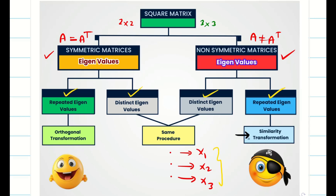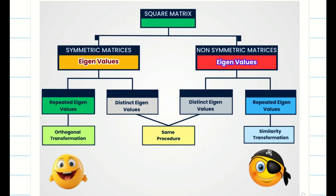In this case, we are going to use the concept called similarity transformation. In today's session, I am not going to deal with distinct eigenvalues because for both cases the procedure is the same — you can watch the video from the playlist. Whatever procedure suits for symmetric matrix with non-repeated eigenvalues also suits for non-symmetric matrices. Today we are going to deal with non-symmetric matrices with repeated eigenvalues. Let us go into the problem.